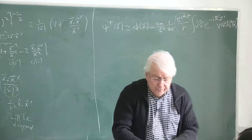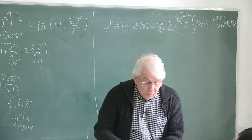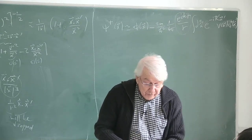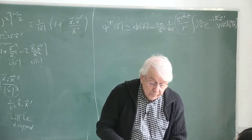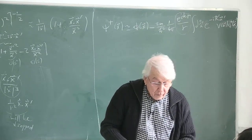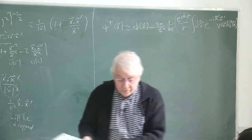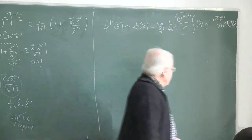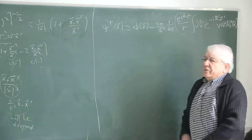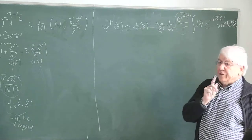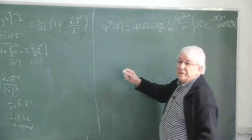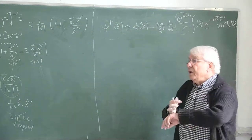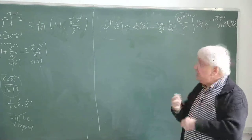Now we can proceed with more physics. We are at a position to define the so-called scattering amplitude, and then eventually the Born approximation and the differential cross-section. This is first of all an integral equation — not a solution, but an equation for the unknown ψ+. We would like to construct ψ+ to describe all the physics, including scattering effects. It appears under the integral sign. Eventually we will find a way to solve it recursively.